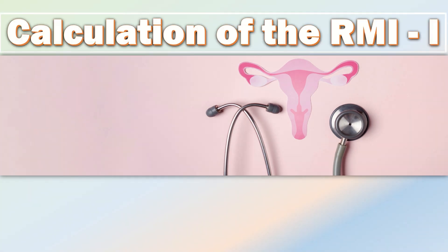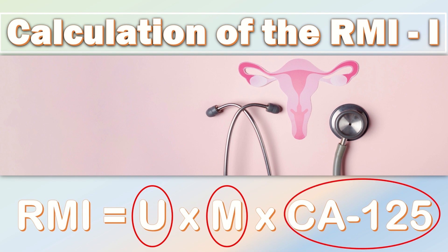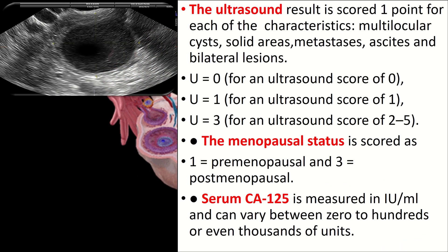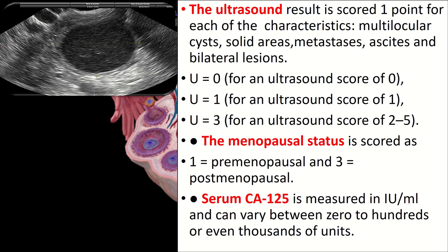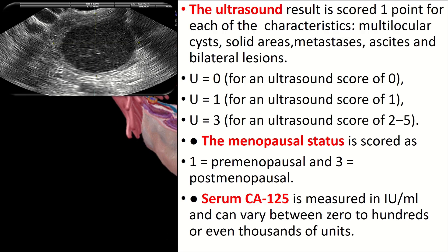RMI1 combines three pre-surgical features: serum CA-125, menopausal status, and ultrasound score U. The formula is U × M × CA-125. The ultrasound score awards 1 point for each of the following characteristics: multilocular cysts, solid areas, metastasis, ascites, and bilateral lesions.